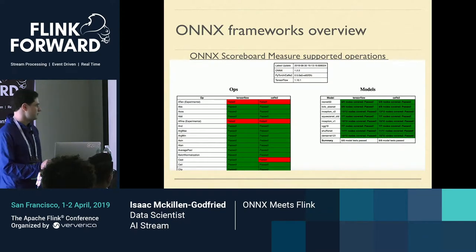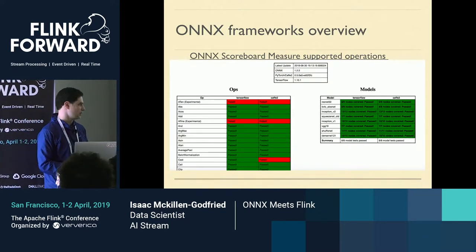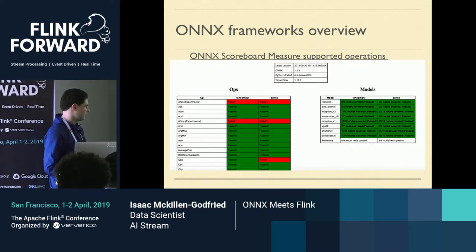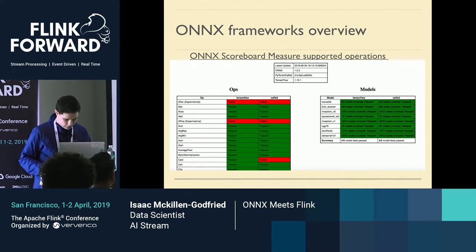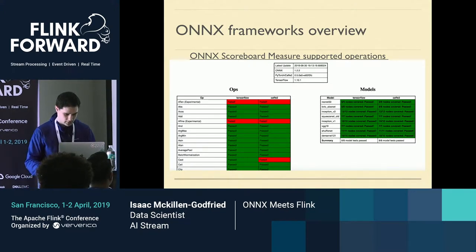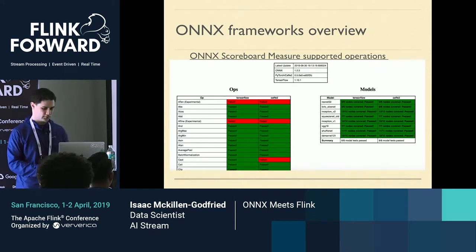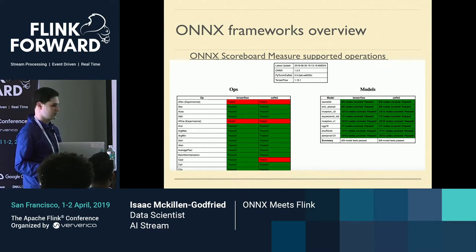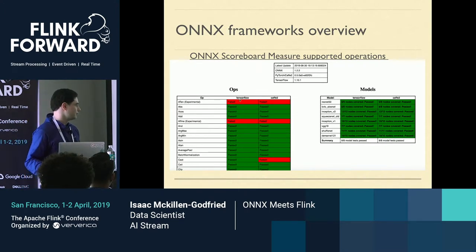For the ONNX scorecard, they measure what operations are supported. There are a total of 116 operations necessary to do all current deep learning tasks. This screenshot shows the top part of the card — Caffe2 and TensorFlow backend — and you can see supported operations versus operations that are still failing on both. I'll post my slides later if anyone wants to see the full scorecard.